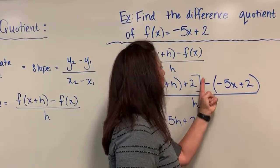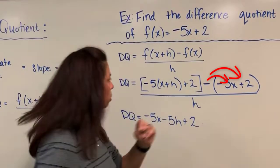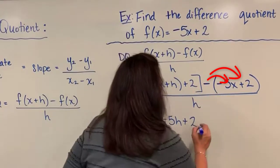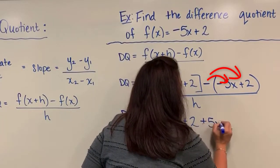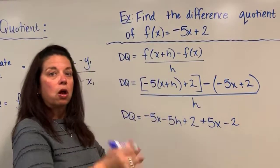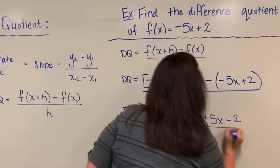So when I do that I end up with plus 5x but then subtract my 2. Of course all divided by the h still.